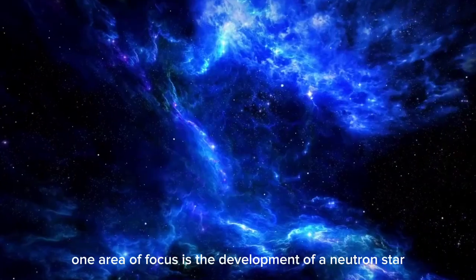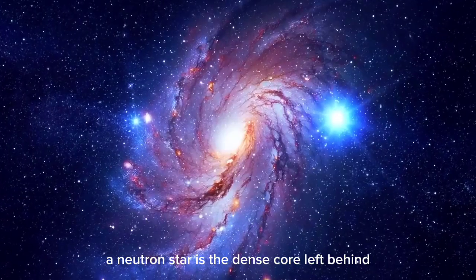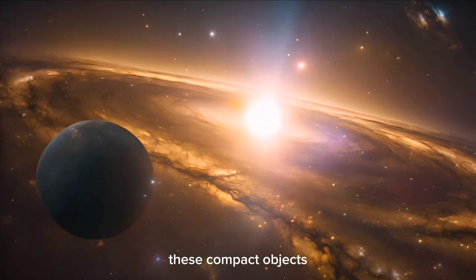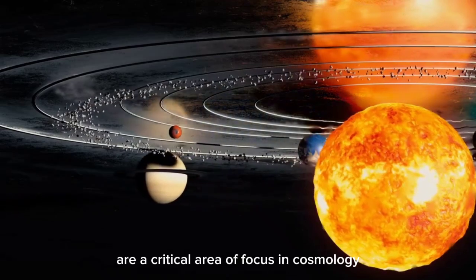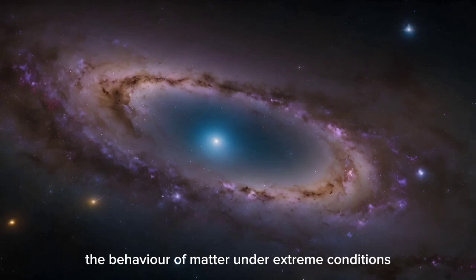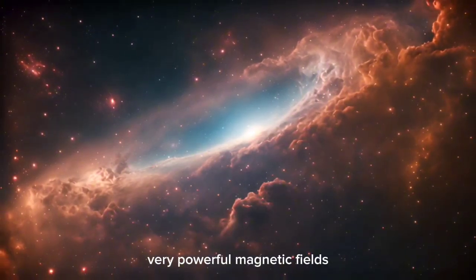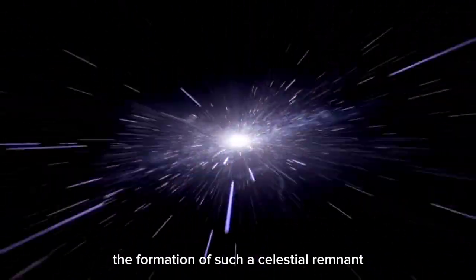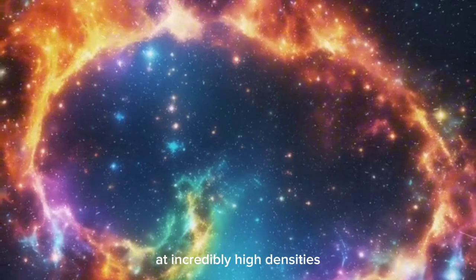One area of focus is the development of a neutron star, or perhaps a black hole, in the remnants of Betelgeuse. A neutron star is the dense core left behind after a giant star like Betelgeuse undergoes a supernova explosion. These compact objects, which can have a mass greater than the sun packed into a volume no larger than a city, are a critical area of focus in cosmology. If Betelgeuse forms a neutron star, it will provide a unique opportunity to study the behavior of matter under extreme conditions. Neutron stars are also known to produce very powerful magnetic fields and are sometimes observed as pulsars, emitting regular bursts of light. The formation of such a celestial remnant could offer pivotal insights into the fundamental physics of extreme gravity and the behavior of matter at incredibly high densities.